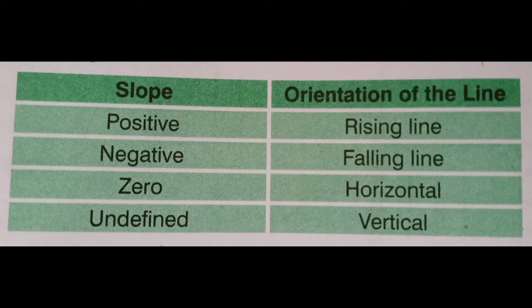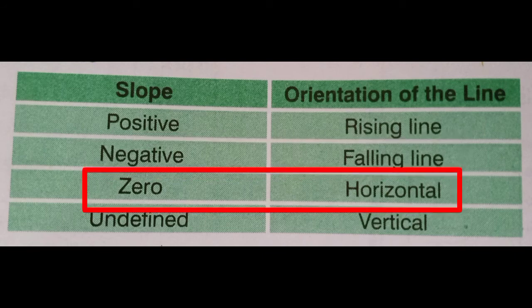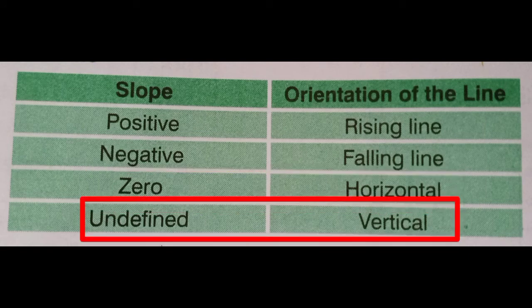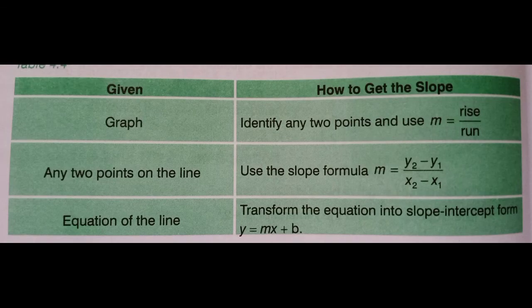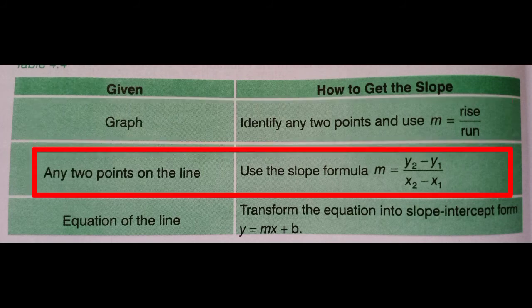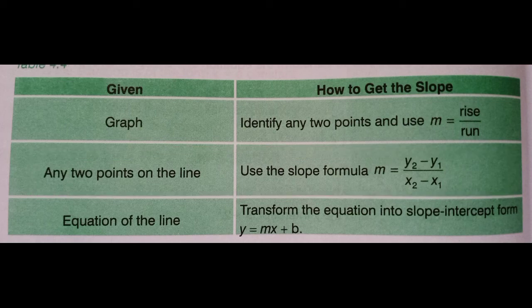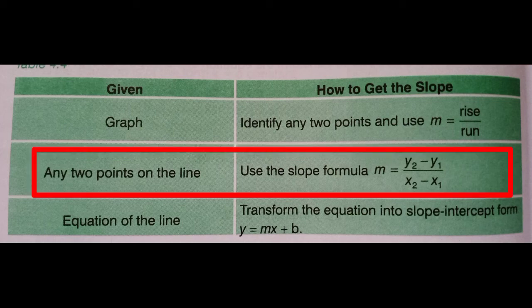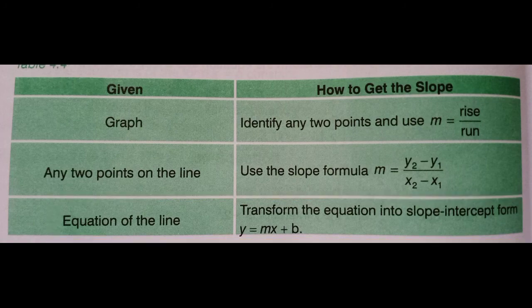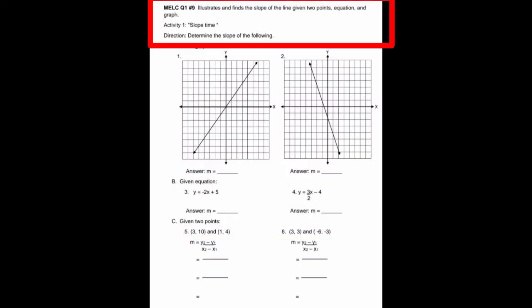To summarize: if the slope is positive, the orientation of the line is rising. If the slope is negative, the orientation is a falling line. If the slope is zero, the line is horizontal. If the slope is undefined, the line is vertical. If the given is a graph, use rise over run. If the given is two points, use the slope formula M equals Y sub 2 minus Y sub 1 over X sub 2 minus X sub 1. If the given is the equation of the line, make sure the equation is in slope-intercept form.